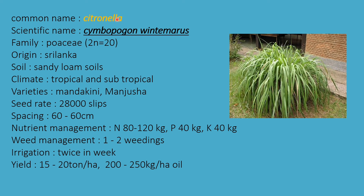The next aromatic crop is citronella. Scientific name is Cymbopogon winterianus, family Poaceae. Chromosome number 2n = 20, origin Sri Lanka. Sandy loamy soils are best suitable. Tropical and subtropical climate is required. Varieties are Mandakani and Manjusha. Seed rate is 28,000 slips per hectare, and spacing is 16 to 60 cm.